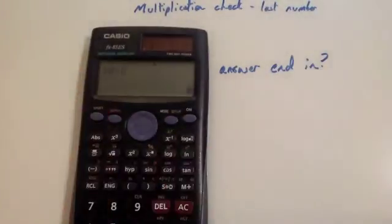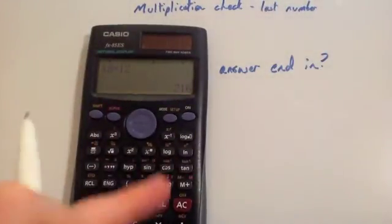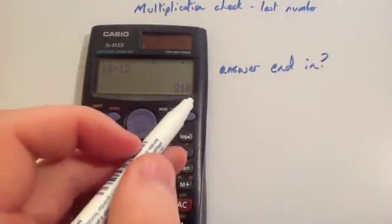Let's just check. 18 times 12 equals 216, and notice that ends in a 6.